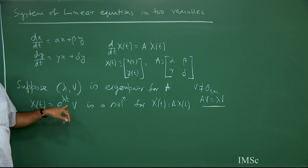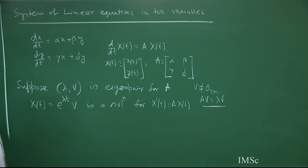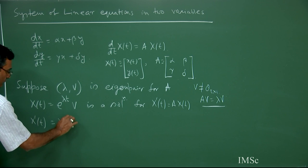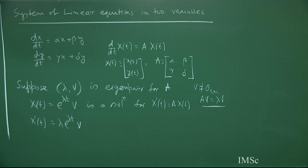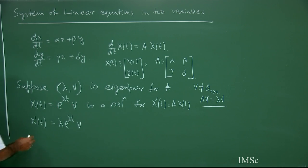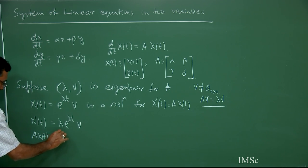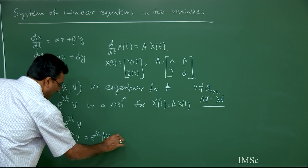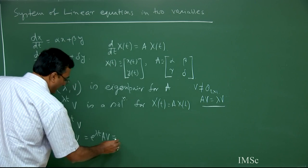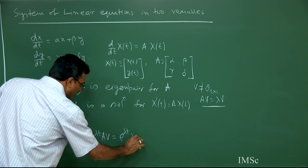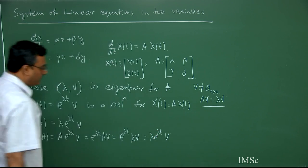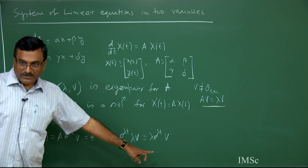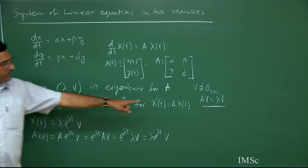λ is a constant and v is a two-component column matrix. Differentiating x(t) with respect to t gives λe^(λt)·v. Since v is an eigenvector with eigenvalue λ, Av = λv, so Ax(t) = e^(λt)·Av = λe^(λt)·v. Thus the left side equals the right side, confirming that e^(λt)·v is a solution for the linear system.